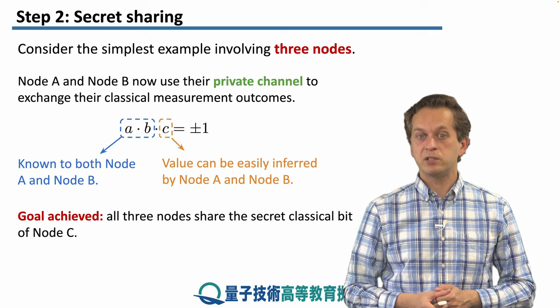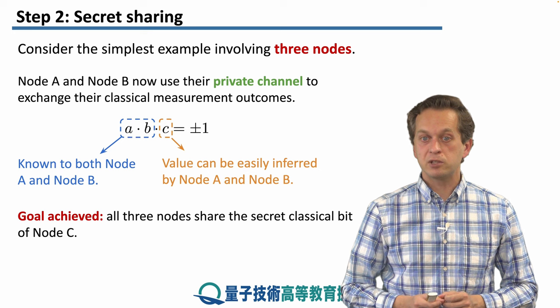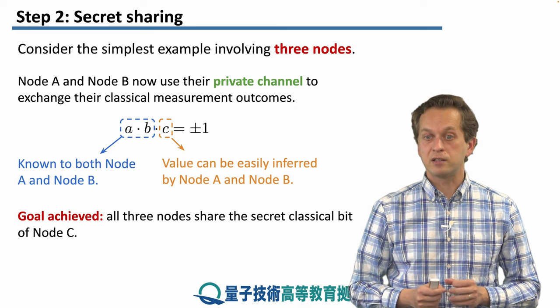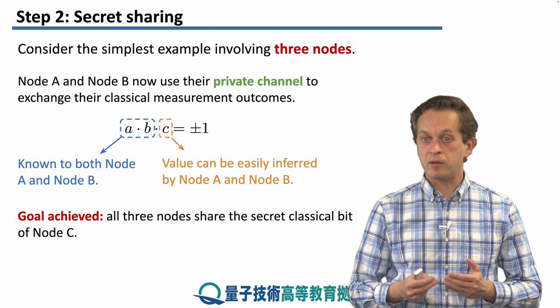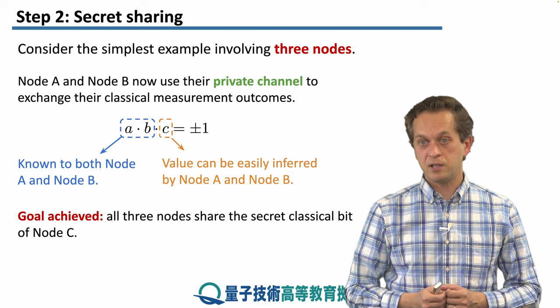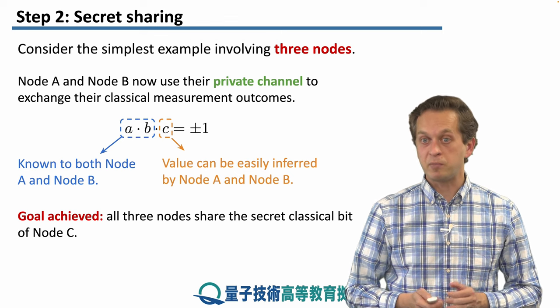And we are done. We have achieved our goal. All three nodes share the secret classical bit c that was generated by the measurement of node c in the Pauli x basis.